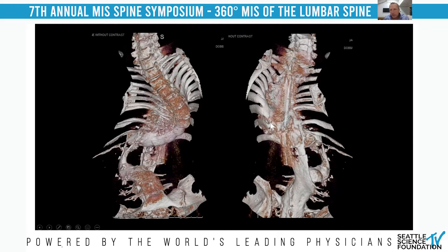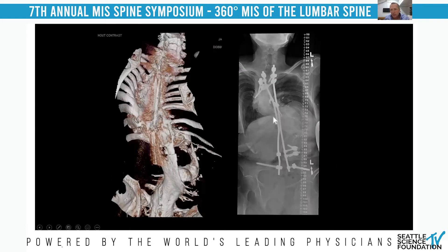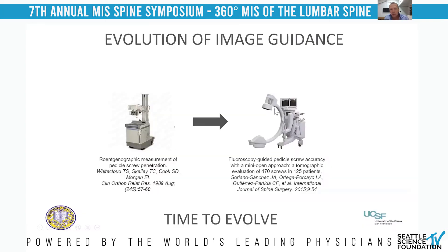Here's a fairly complex spinal deformity. If you learn how to use the technique, implanting screws into this case becomes as easy as a degenerative case because you can see the bone and the channels you need to place the screws through. Navigation really is an evolution and it's continuing to evolve. Whether you assess screws through X-ray, fluoroscopy, or a navigation system — that's what we've been doing for the last 40 years — and it really is time to evolve.